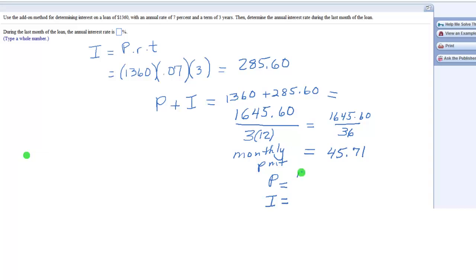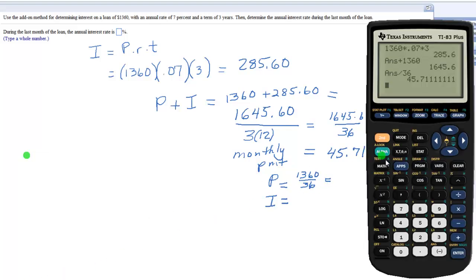So you can compute by taking the original principal and divide it by 36. Okay, so let's see what that gives us. So, $1,360 divided by 36.